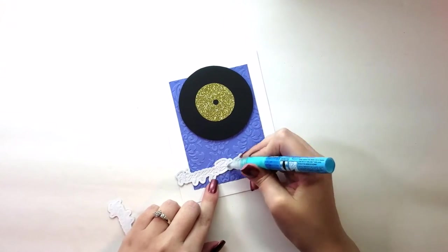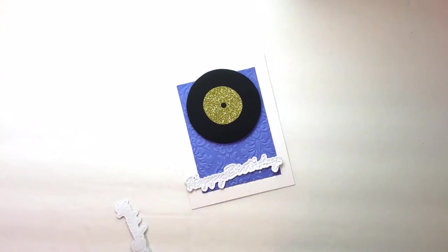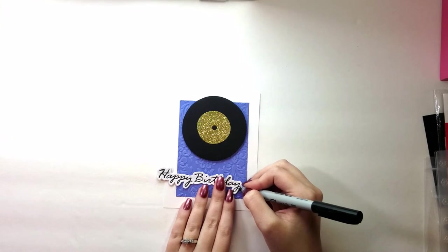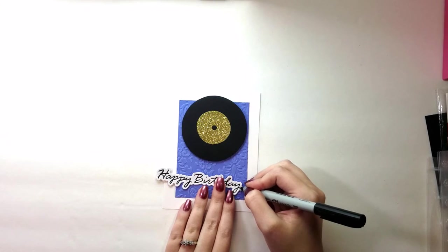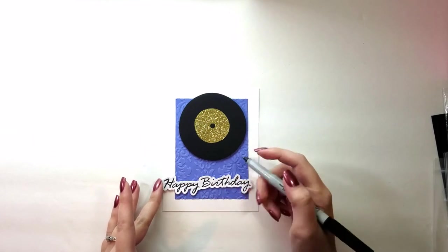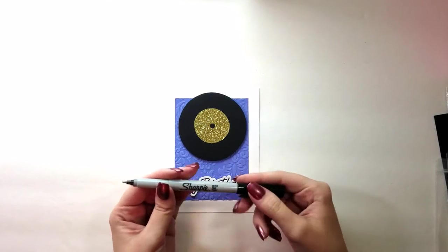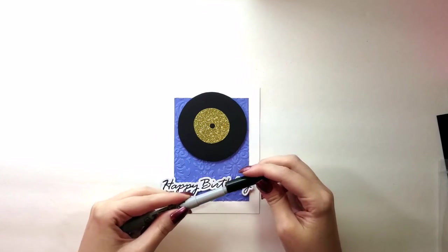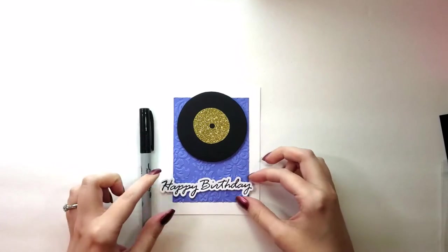I am adhering these together with my Zig two-way glue pen. Once my Happy Birthday sentiments are all glued together, I will go ahead and use a fine tip Sharpie and trace the inside to make the Happy Birthday embossing show up better. And you can see here, it just shows up better.